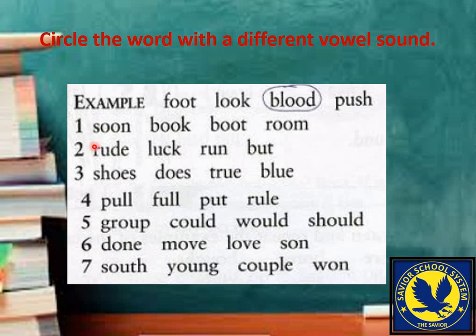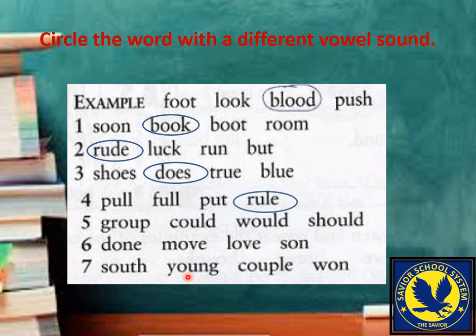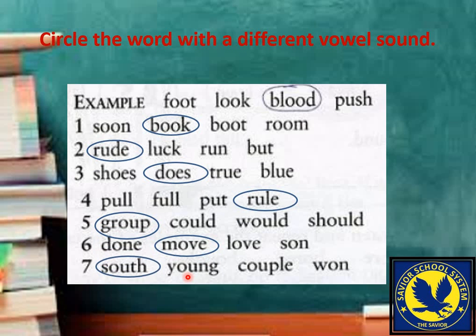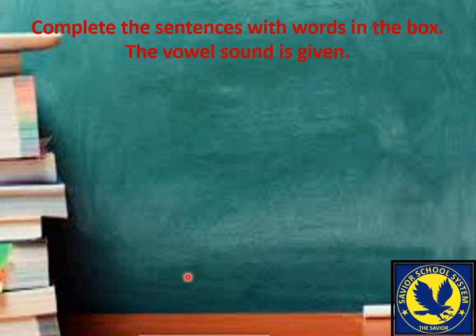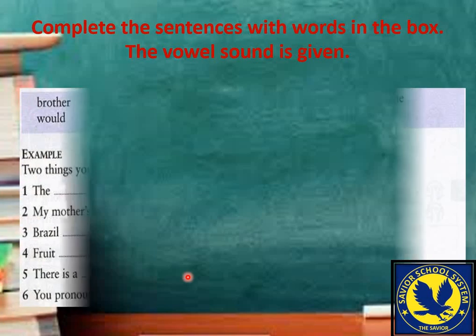ہم جلدی سے solve بھی کرتے ہیں لیکن تھوڑا quickly کریں گے تاکہ آپ خود بھی تھوڑی سی effort کریں۔ Next exercise: complete the sentences with words in the box — the vowel sound is given۔ پہلا sentence ہے: two things you can put on a foot — a shoe and a boot۔ یہ والی symbol 'put' کی آواز ہے اور یہ دو dots والا symbol 'boot' کی long vowel آواز ہے۔